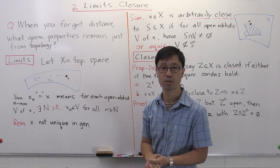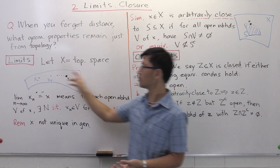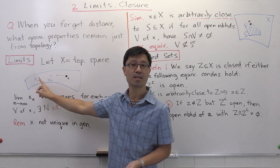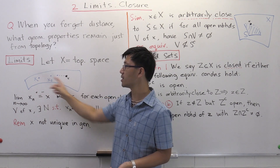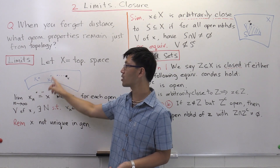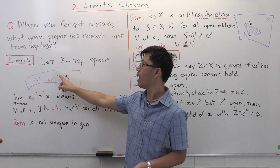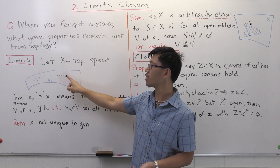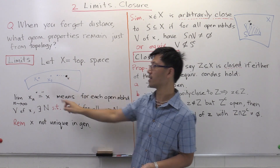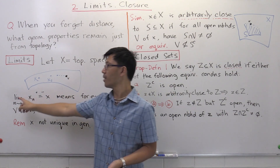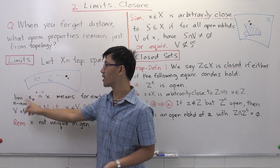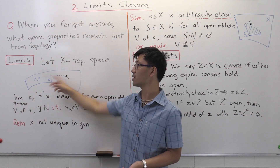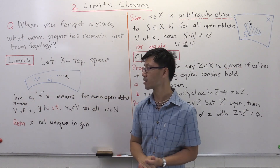So let X be a topological space, like this one here in blue. Suppose we have a sequence of elements inside here, x1, x2, x3, and so on. We want to have the notion that it tends to some limit, little x. So what does it mean? The limit of xn, as n goes to infinity, is equal to this x inside big X.